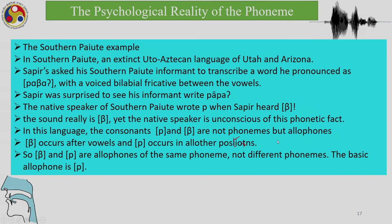The basic phoneme is P. This is another example of the psychological reality of the phoneme: the speaker of a language cannot hear distinctions that are not phonemic — in fact, here the speaker cannot even hear the allophones produced in his own language.